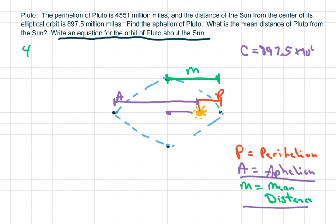So it's 4551 million miles. So they give you that, the P. And then we're going to add our length of our focus here, 897.5. And that gives you 5,448 million miles. So basically this is 5,448 million miles.